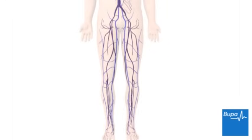This animation shows how deep vein thrombosis, or DVT for short, forms. DVT is a condition where a blood clot forms in a deep vein, usually in the leg. Click the navigation arrows below the animation screen to play, pause, rewind or fast-forward the animation.